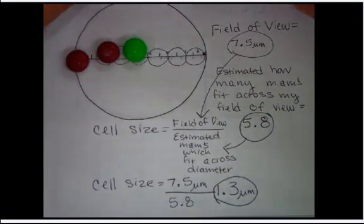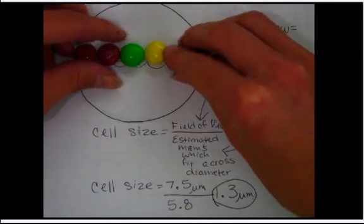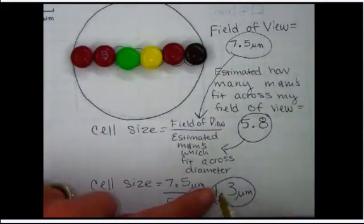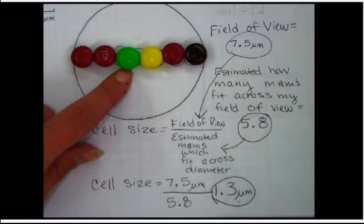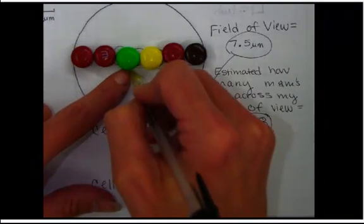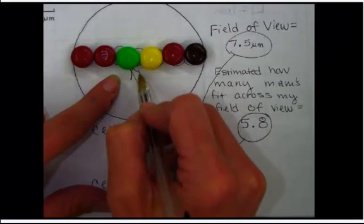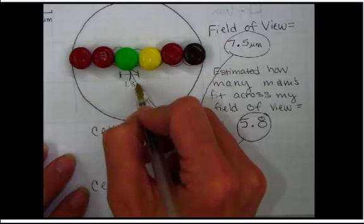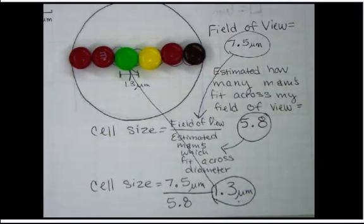So I go back and I look at my cell diameter. And that tells me that this size is the size of 1 cell or 1 M&M from end to end represents 1.3 microns. And that's how you calculate the size of a cell when you do not know the field of view from the beginning.